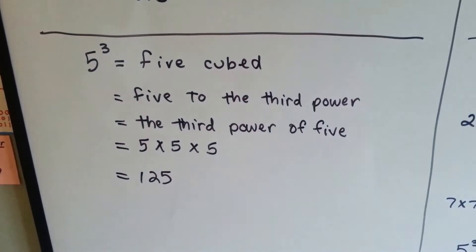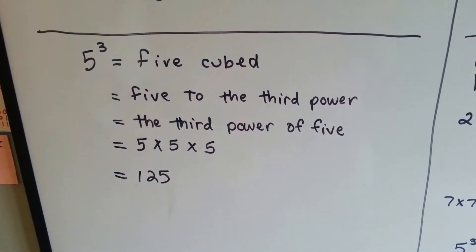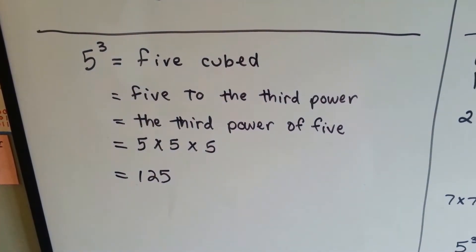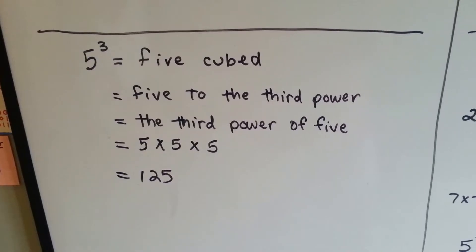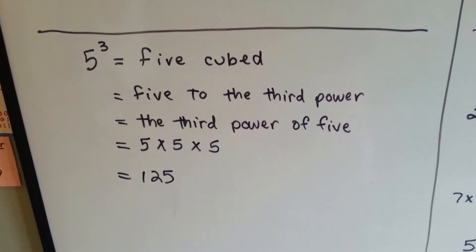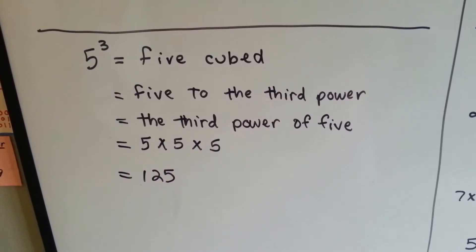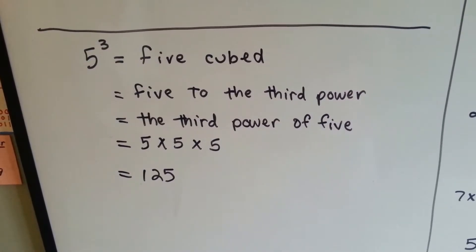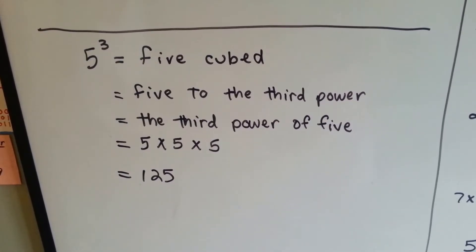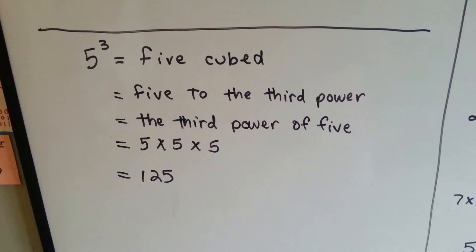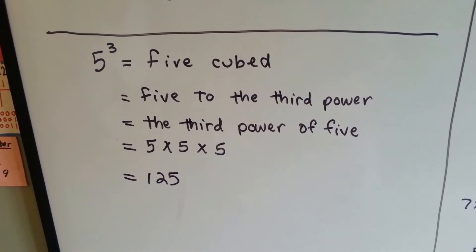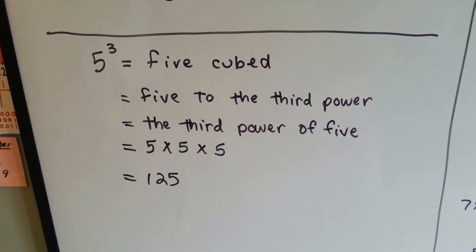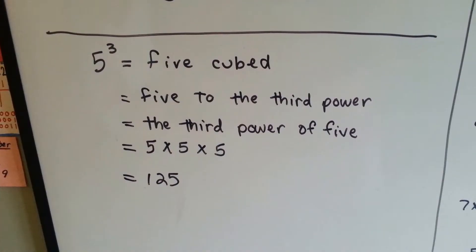If we see a 5 with a little 3 above it — if you remember from 5th grade math — that means '5 cubed,' '5 to the third power,' or 'the third power of 5.' It means 5 times 5 times 5, which equals 125.